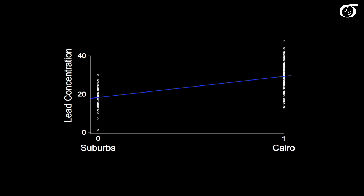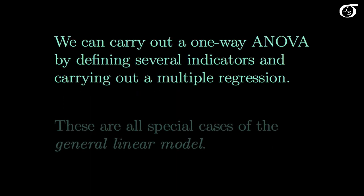And this can be generalized even a little bit further. We could carry out a one-way analysis of variance by defining several indicator variables and carrying out a multiple regression. And these are all special cases of something that we call the general linear model.